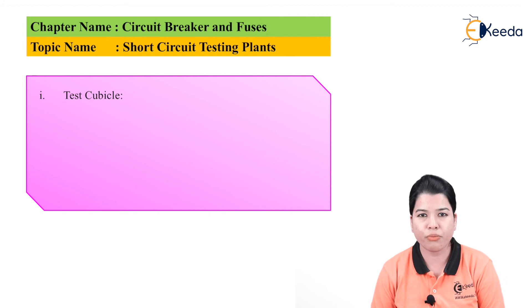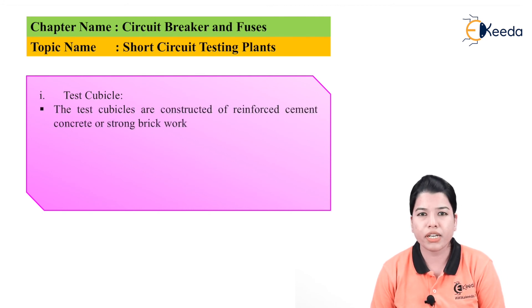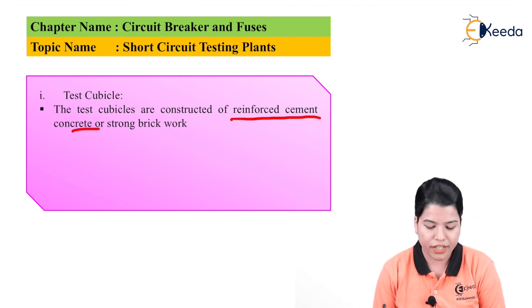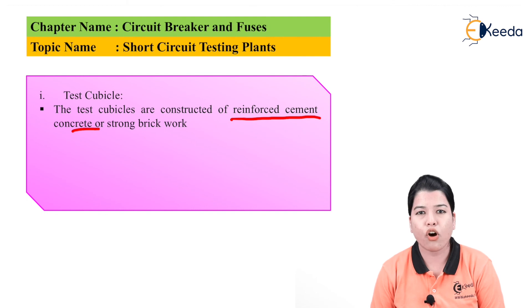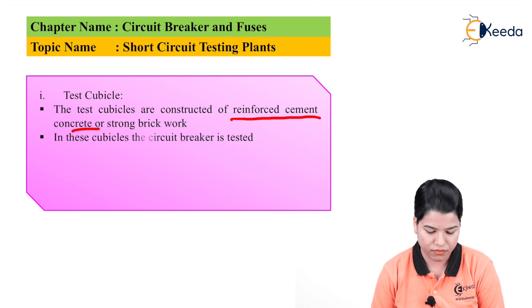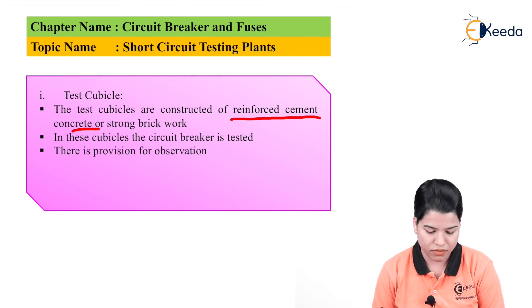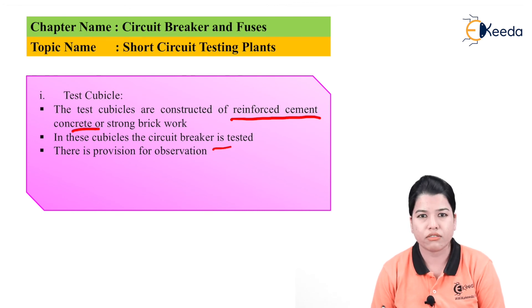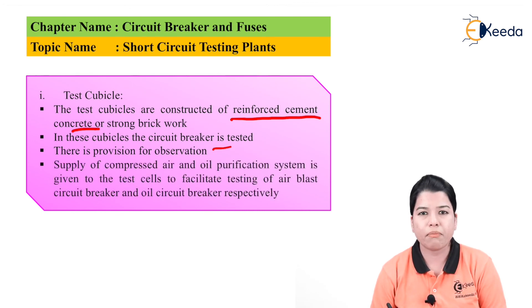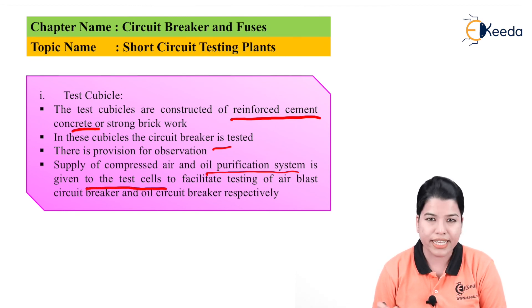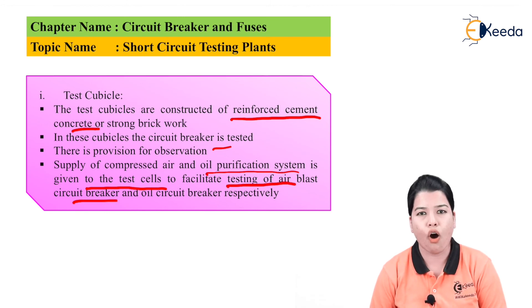The test cubicle is constructed of reinforced cement, concrete, or strong brickwork, and the test circuit breaker is placed inside it. A provision for observation is made, and supply of compressed air and an oil purification system is provided to the test cell to facilitate testing of air-blast or oil circuit breakers.